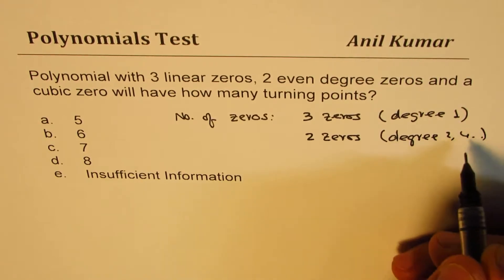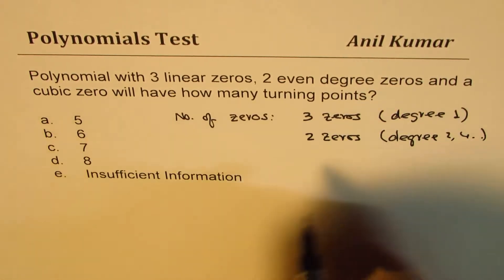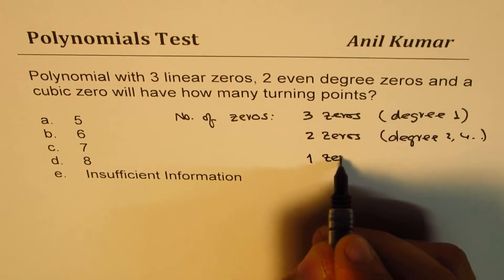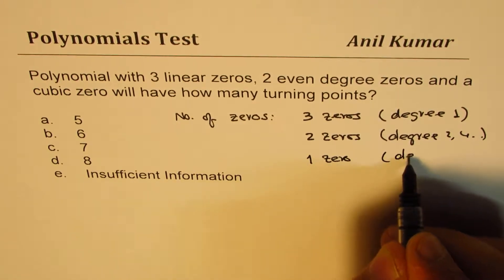So we'll just assume that to be of degree two and a cubic zero, so one zero which is of degree three.